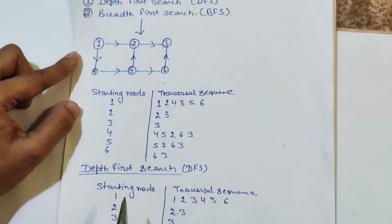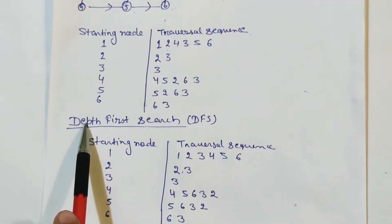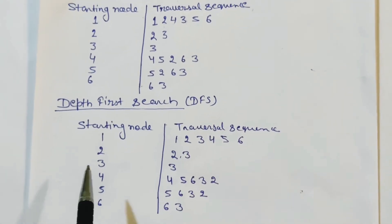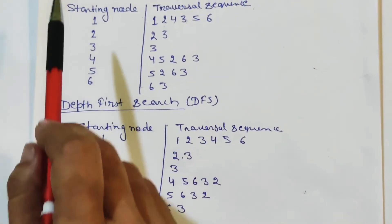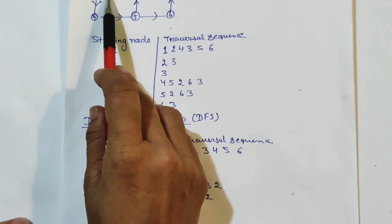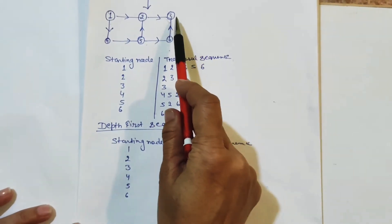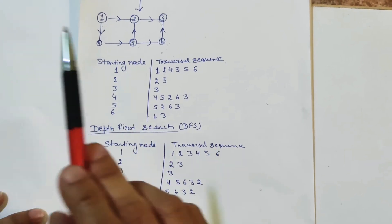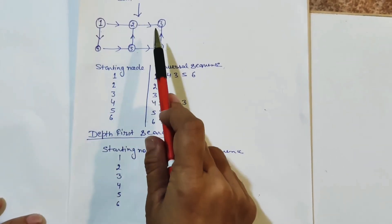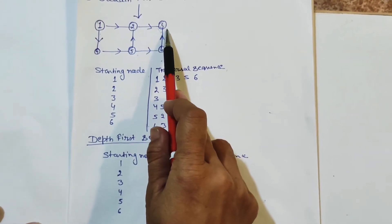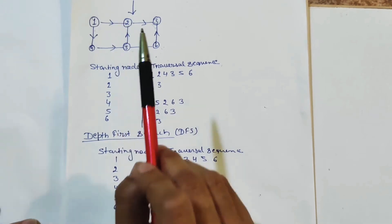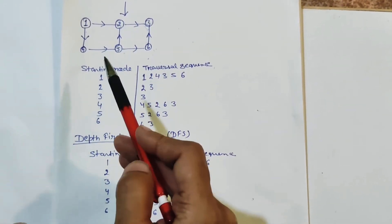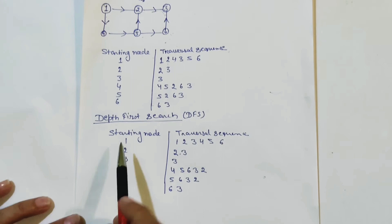Next we have Depth First Search. In DFS, what we do is traverse each element and then go into its backtracking. And when does backtracking happen? When a dead end comes — meaning no more elements can be traversed ahead — then we start going back.